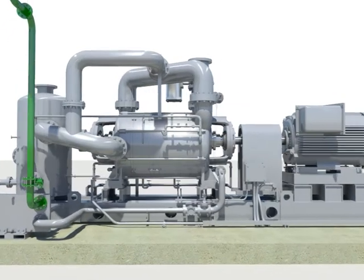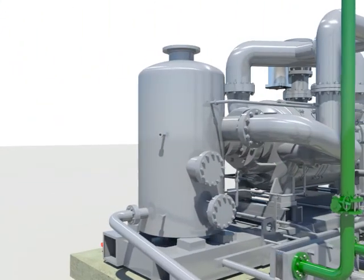The condenser vacuum pump system consists of the separator, seal water cooler, vacuum pump, and motor.